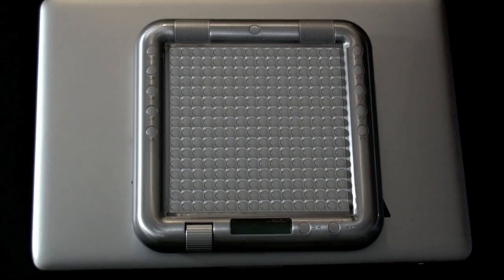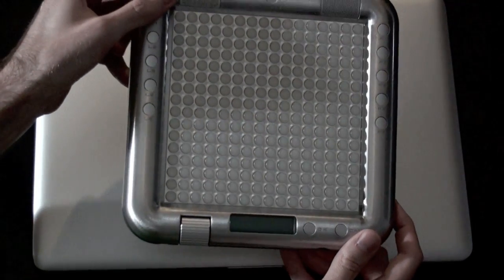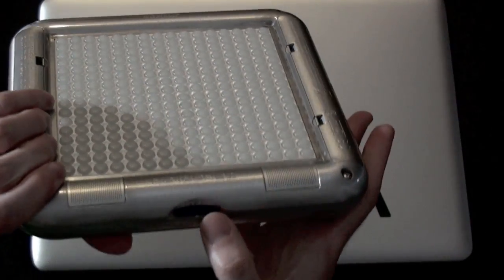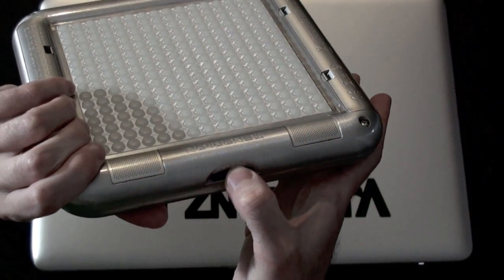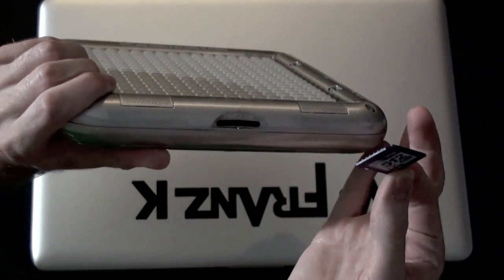And now I will quickly go over the update process with you. First of all, take your Tenori On and go to the bottom, press lightly on the memory card to make it pop out and carefully remove it.